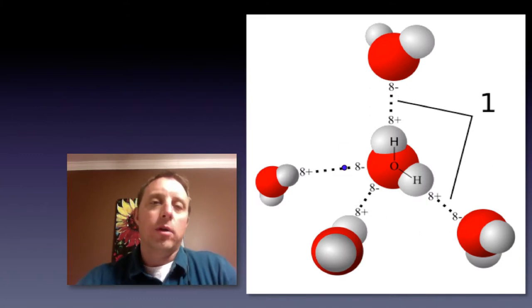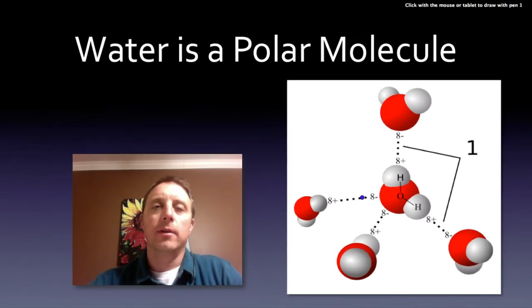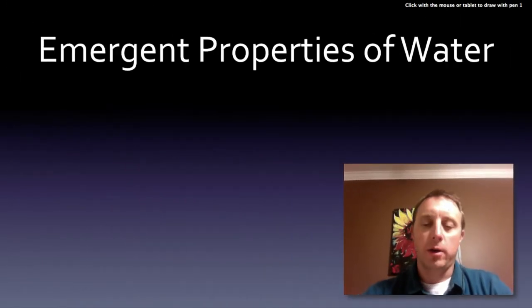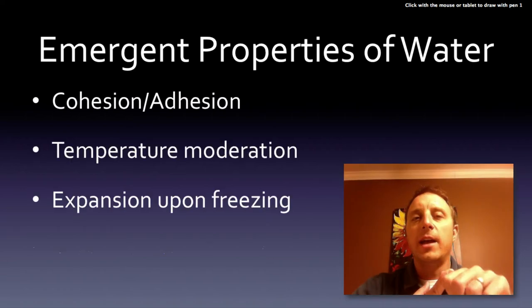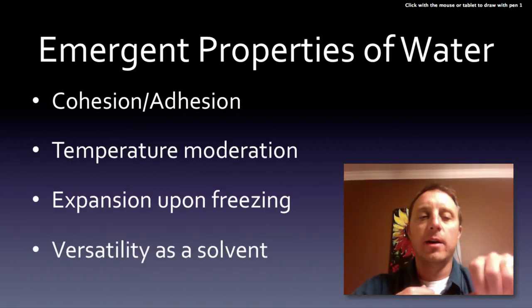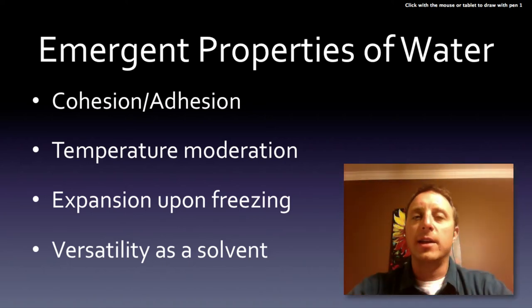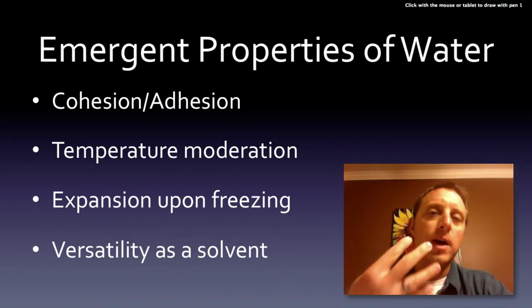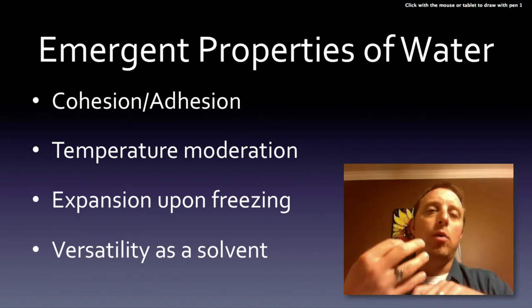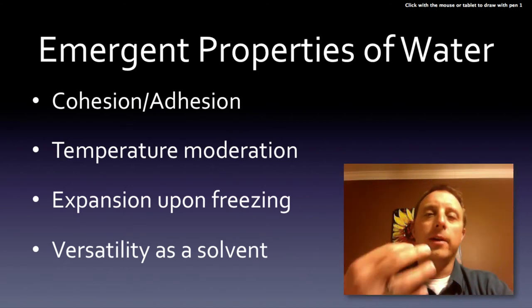So what are these four very important emergent properties of water? The cohesion and adhesion, temperature moderation, expansion upon freezing, and versatility of the solvent. These four properties are what make water so important for life on Earth.